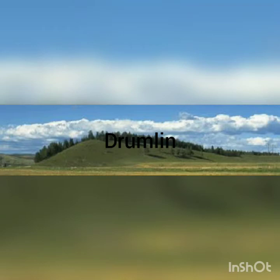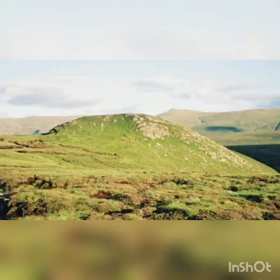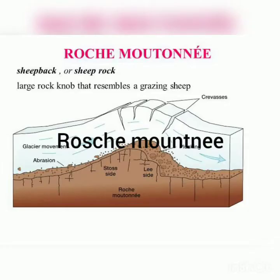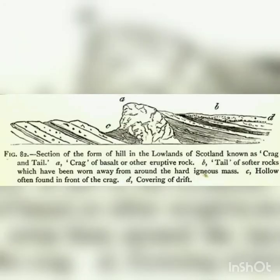Roche moutonnée, also known as sheep rock, has a shape influenced by the flow of ice. You need to observe the direction of ice flow and wind direction to understand this landform.